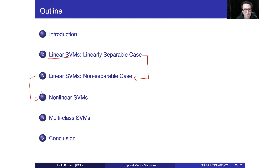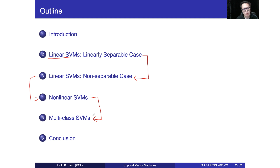The SVM is a binary classifier — it outputs either plus one or minus one, meaning it handles two classes. We will then extend this idea into a multi-class SVM that is able to deal with more than two classes.